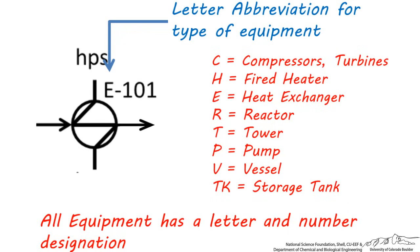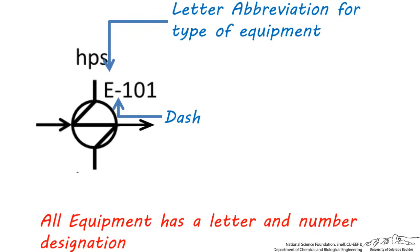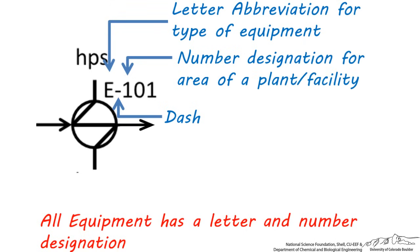As part of the letter and number designation, the letter must be followed by a dash, followed by a three or sometimes four-digit number. This first digit represents the area of the plant where the equipment can be found. Oftentimes it's based on the location of a process within a specific facility.